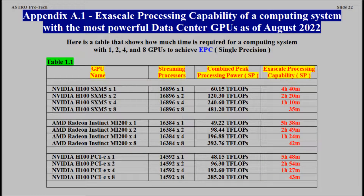Appendix A1. Exascale Processing Capability of a Computing System with the Most Powerful Data Center GPUs, as of August 2022.